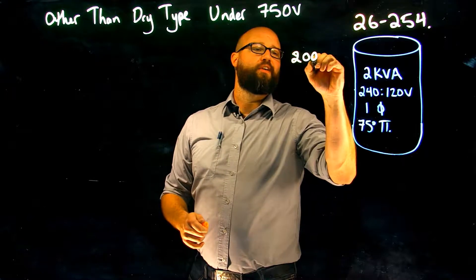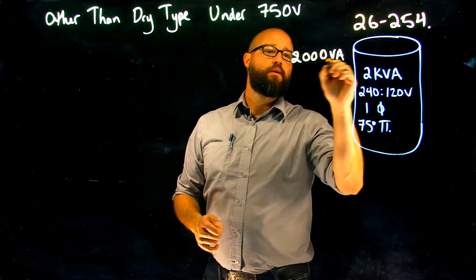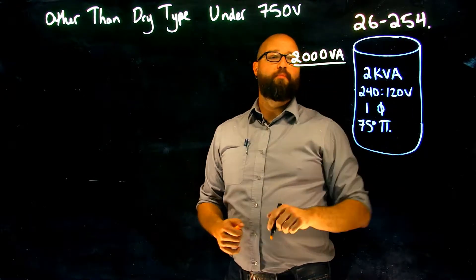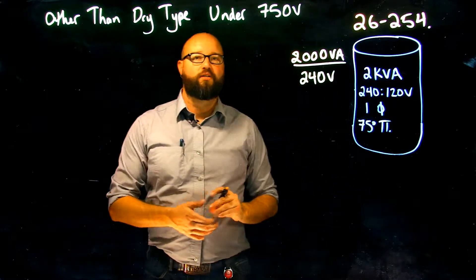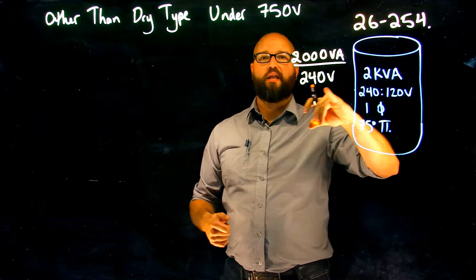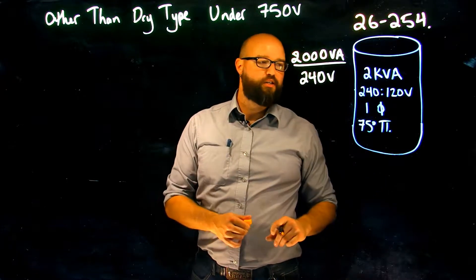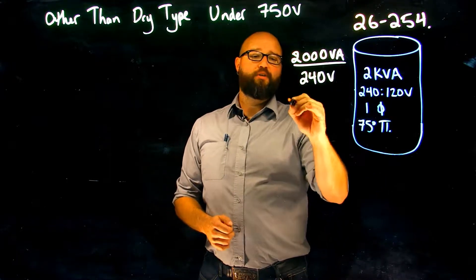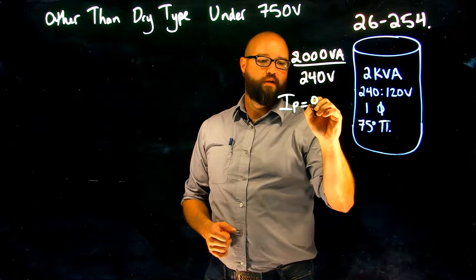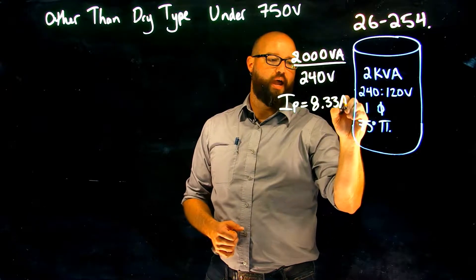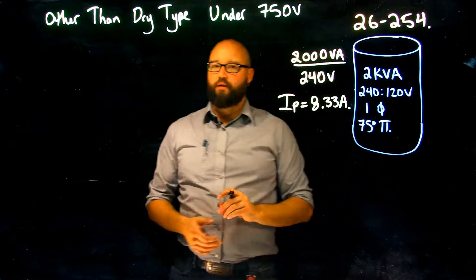So we have 2000 VA divided by my primary voltage of 240 volts. As this is a single phase transformer, I do not need to multiply that line voltage by root three for this calculation. We should end up with a primary rated current of 8.33 amps.